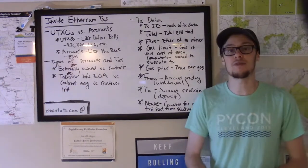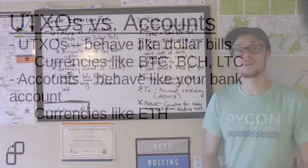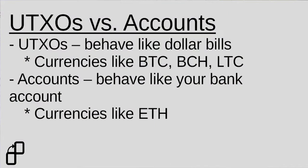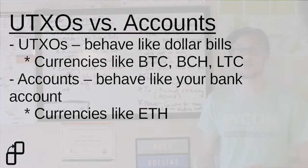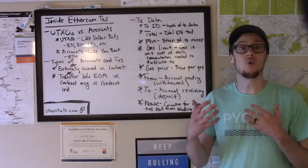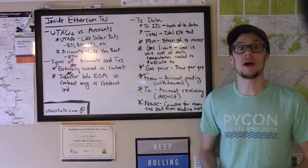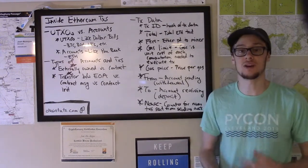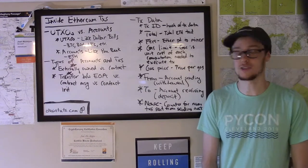Currencies like Ethereum behave more similar to a traditional bank account. Ethereum addresses act as accounts, and what these do is they store the difference in state over time of the account balance. So every time there's a transaction, the address state changes, which is like a withdrawal or deposit depending on whether you're sending or receiving Ethereum from your address.